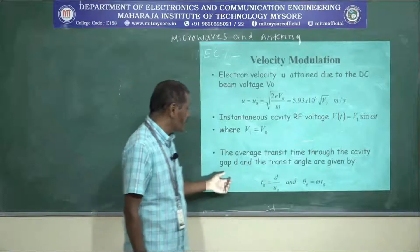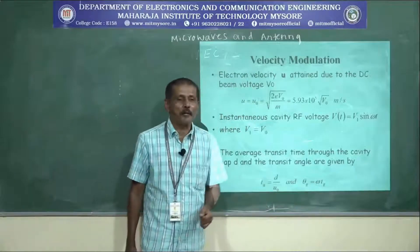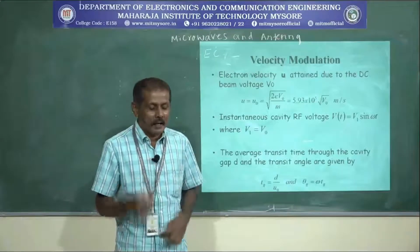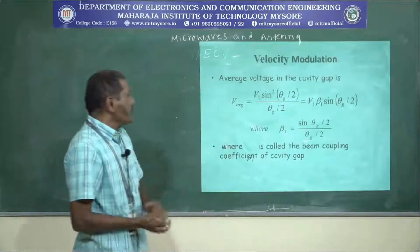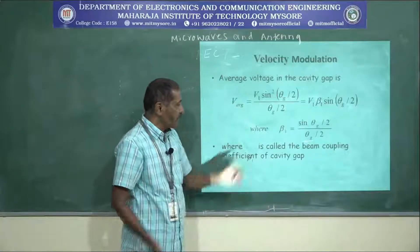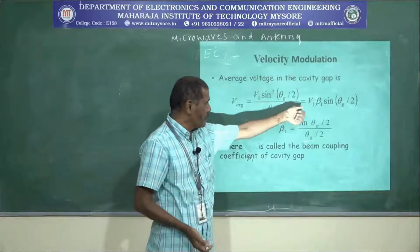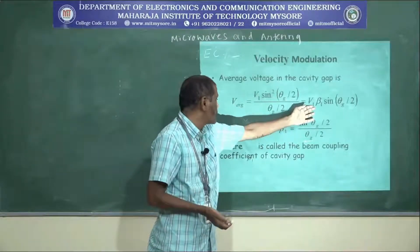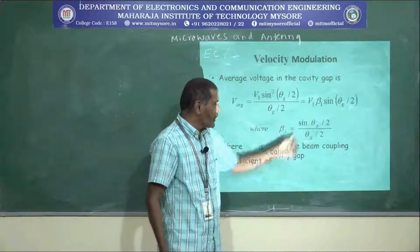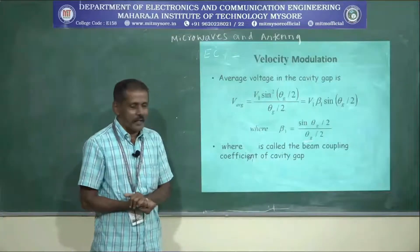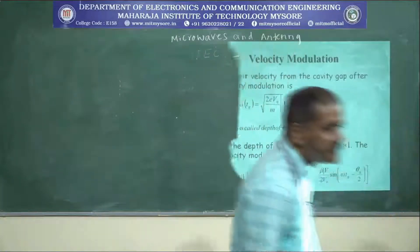The average voltage in the cavity gap is calculated from V1 × sin²(θg/2) / (θg/2), which can also be written as V1 × β1 × sin(θg/2), where β1 is called the beam coupling coefficient of the cavity gap. Before entering the cavity grid, the electrons have some velocity; in the cavity grid they have a certain velocity; and exiting the grid they have an exit velocity. The beam coupling coefficient β1 represents the coupling of the cavity gap.